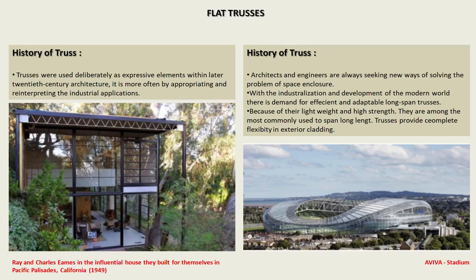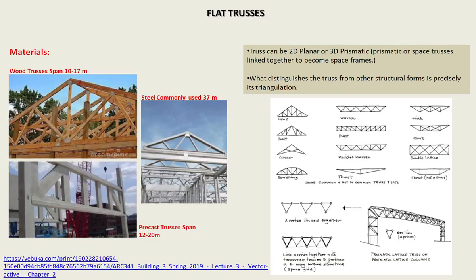Trusses provide complete flexibility in exterior cladding. Materials could be wood — truss spans are still commonly used — and the precast truss span. A truss can be 2D planar or 3D prismatic. What distinguishes the truss from other structural forms is its triangulation.